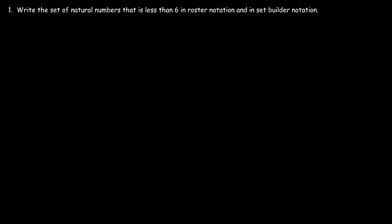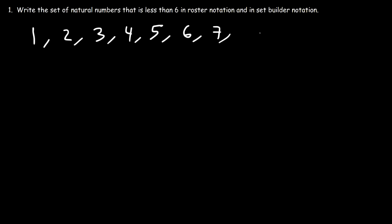First, we need to know what exactly natural numbers are. Natural numbers are integers that start with 1 and go up — so natural numbers are basically positive numbers: 1, 2, 3, 4, 5, 6, 7, 8. These are all natural numbers. 0.5 is not a natural number, and 0 or negative 8 is not a natural number.